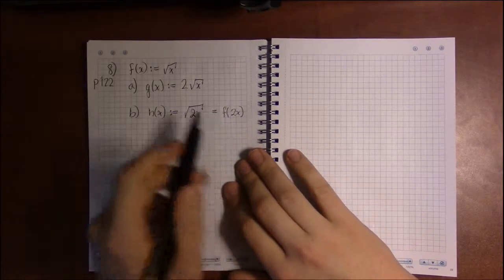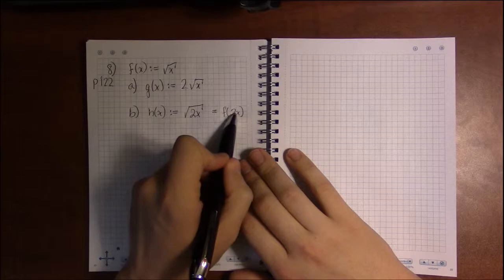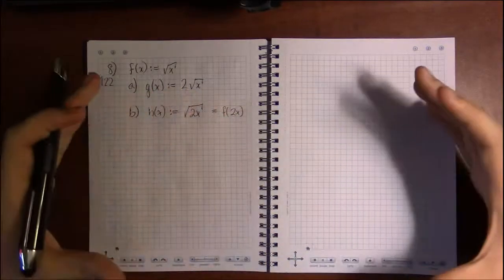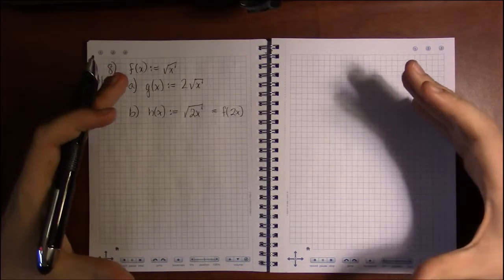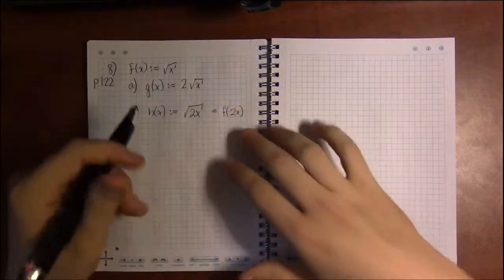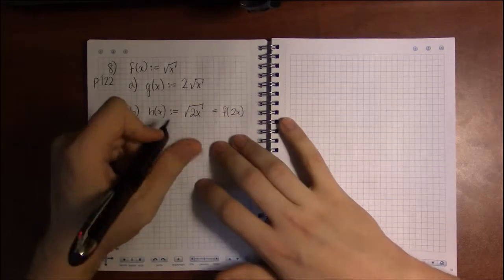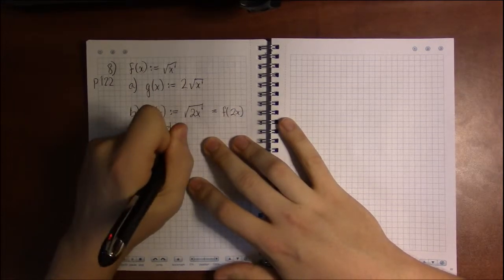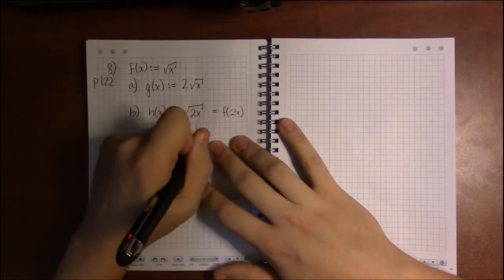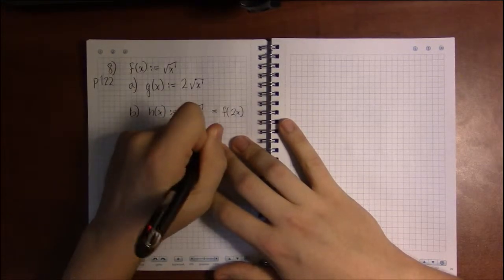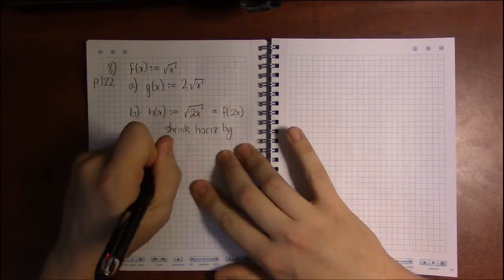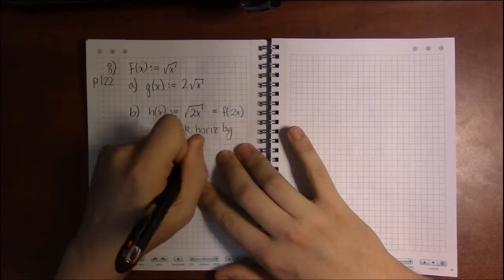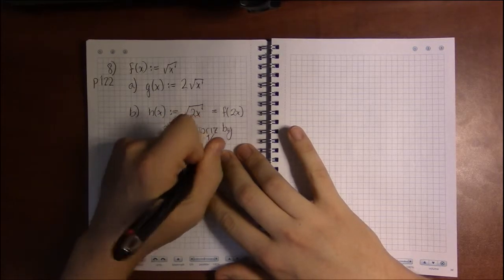So this is a horizontal transformation where we're multiplying x's by 2. You'd think that would stretch, but this is horizontal. So it's the exact opposite. It's going to shrink by a factor of one half. It's going to shrink horizontally by a factor of one half.